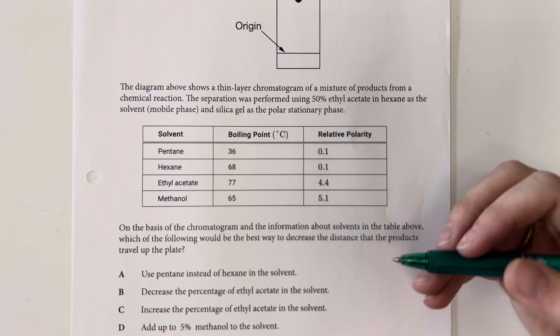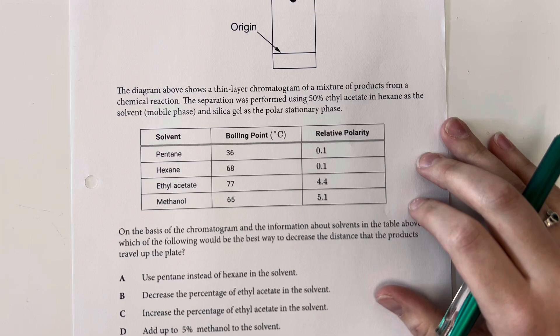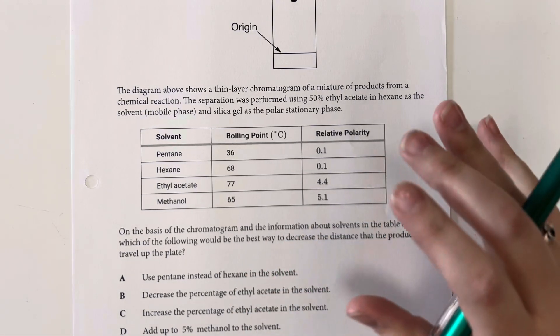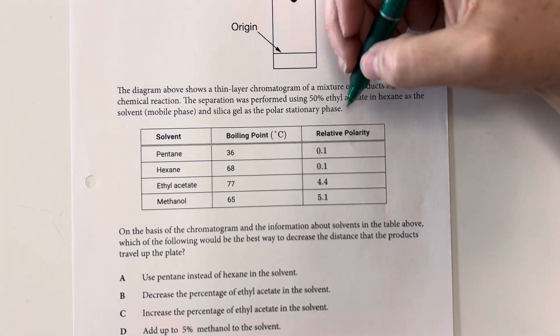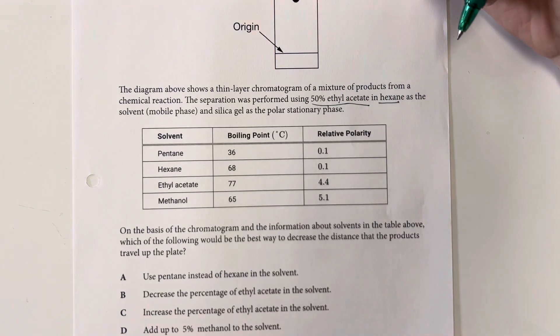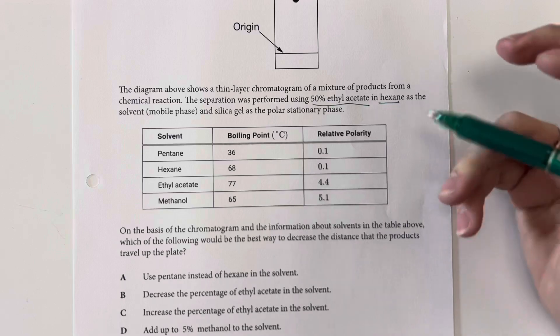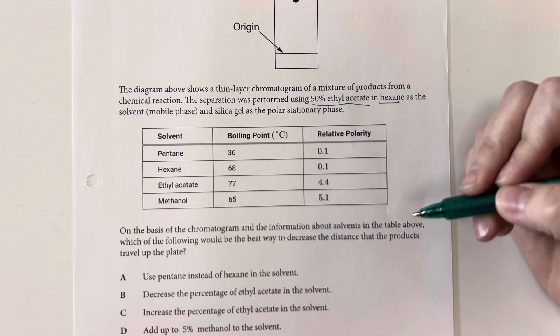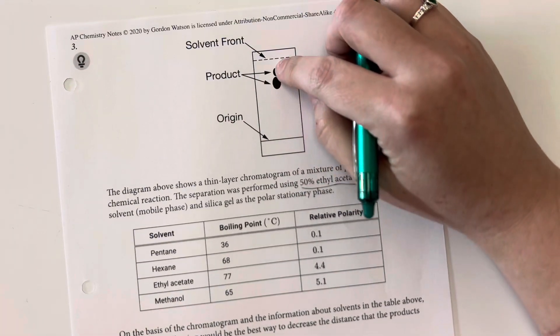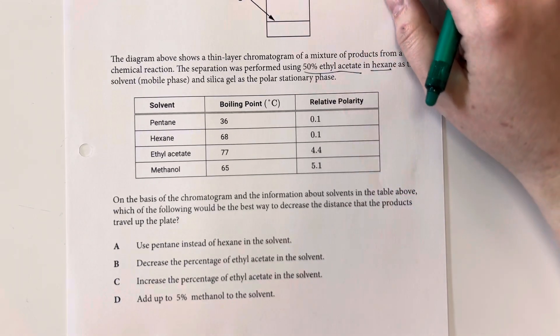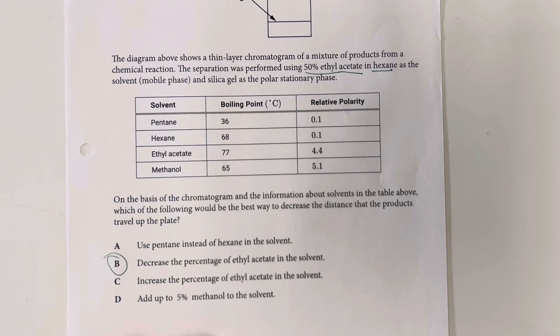So we are going to be comparing relative polarities dealing with the different products that we are separating out on the chromatogram. So we are dealing with ethyl acetate and hexane. And so the more ethyl acetate we have present in the solvent, we are going to have a higher polarity. So if I want my products to not travel up as high, you can see that they have traveled up pretty high, which means that they are relatively polar. I want to decrease the polarity of the solvent, and so I'm going to decrease the percentage of the ethyl acetate that is in solution.